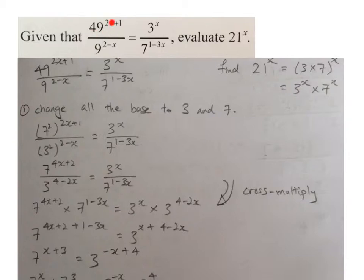Now, can you see that I have number 49 here, 9 here, 3 and 7? We have to be sensitive towards numbers. An indication tells us that 49 is actually 7 squared and 9 is actually 3 squared.